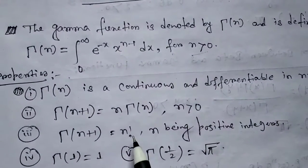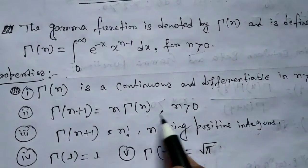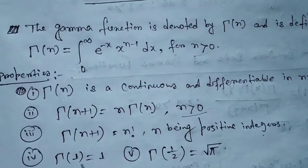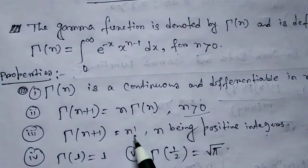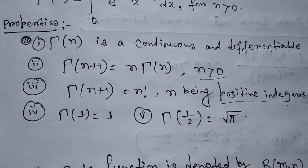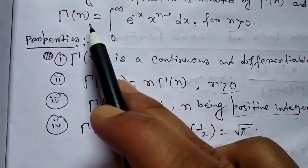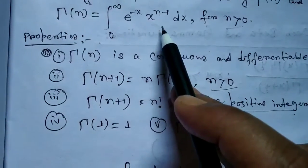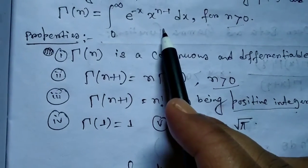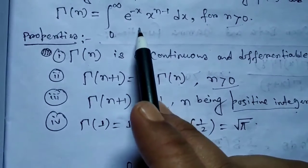So Γ(n+1) = n factorial is true whenever n is a positive integer. Property 4: Γ(1) = 1 — if we put n = 1, we can see that Γ(1) = 1. Property 5: Γ(1/2) = √π — if we put n = 1/2 then we get Γ(1/2) = √π.